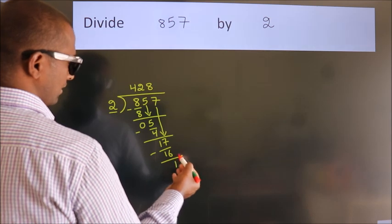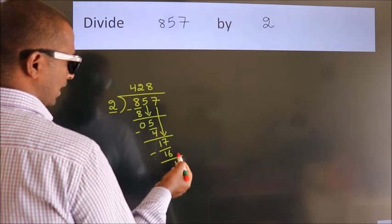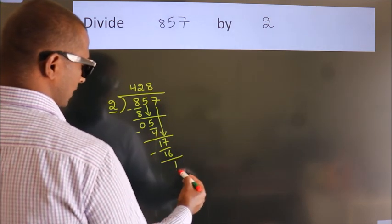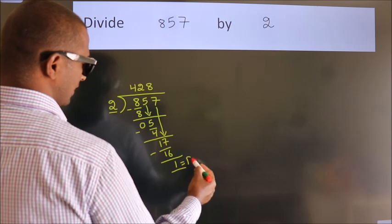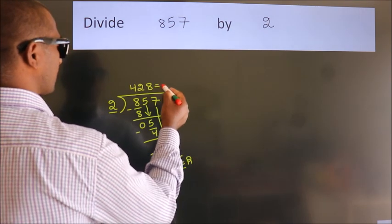After this, no more numbers to bring it down. So, we stop here. This is our remainder. This is our quotient.